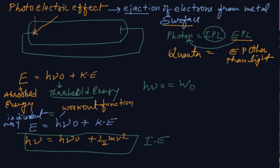That energy is thrown on the metal surface and ejection of electrons takes place — this is the photoelectric effect. It is given by the equation E = hν₀ + kinetic energy, also known as the Einstein equation.